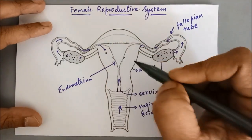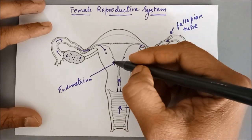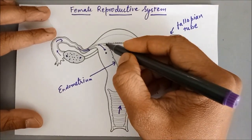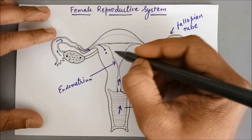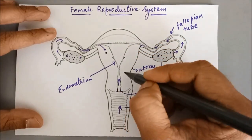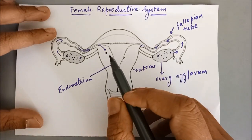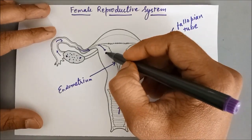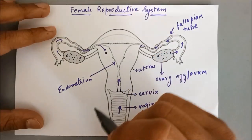But if the female reproductive system does not receive any sperm, then this inner lining of the uterus — the endometrium — and the egg shed in the form of blood outside the female reproductive system. This bleeding, which carries away the egg as well as the inner lining of the uterus, is called menstruation.